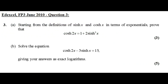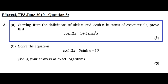In this video I'm going to do a past exam question on hyperbolic functions. Question 3a: starting from the definitions of hyperbolic sine x and hyperbolic cos x in terms of exponentials, prove that hyperbolic cos 2x is equal to 1 plus 2 hyperbolic sine squared x.